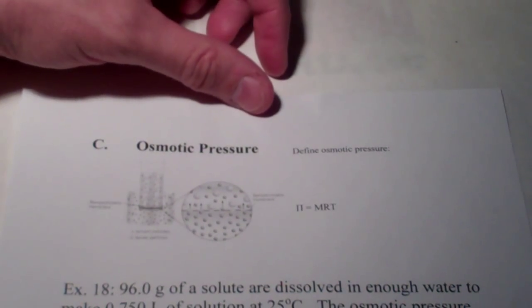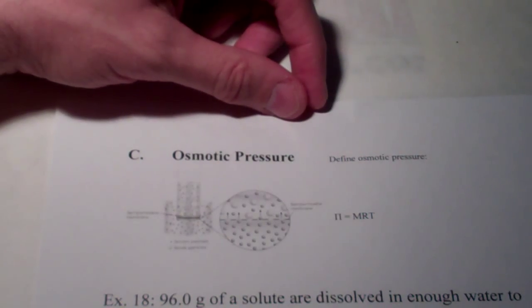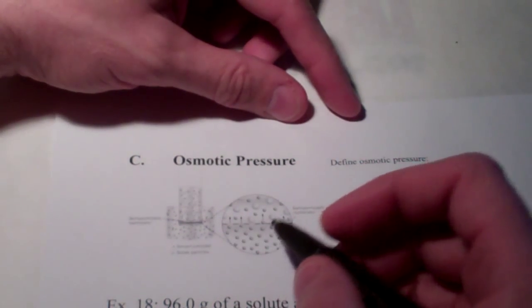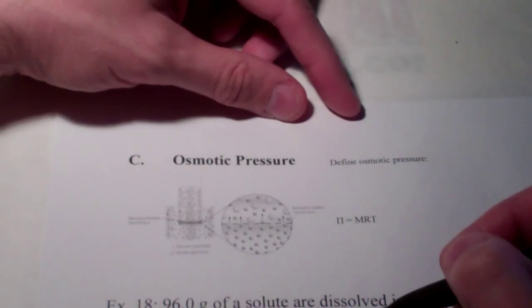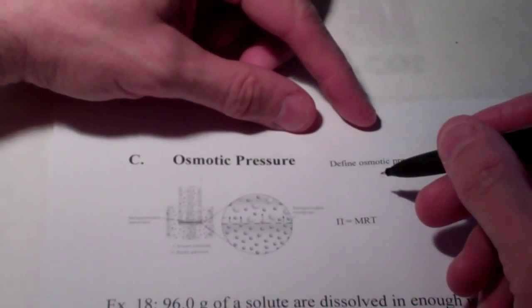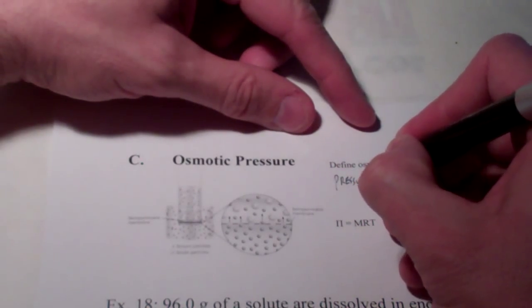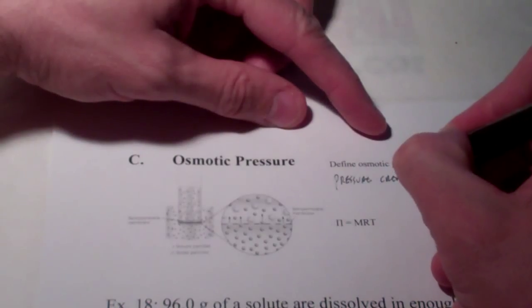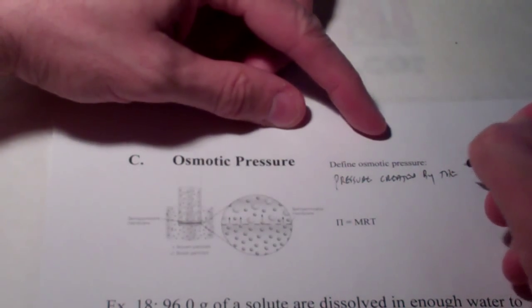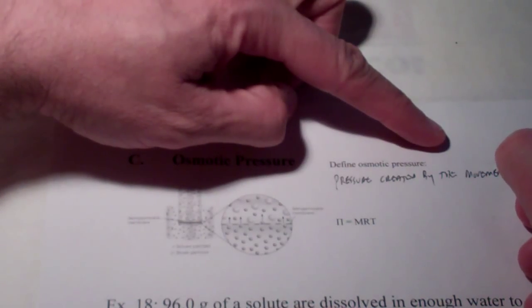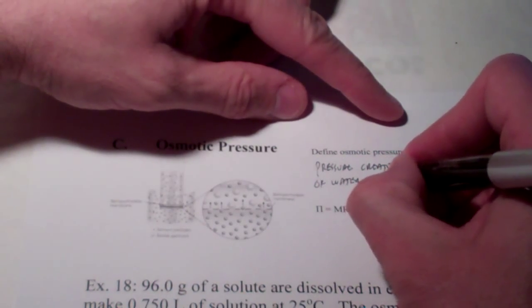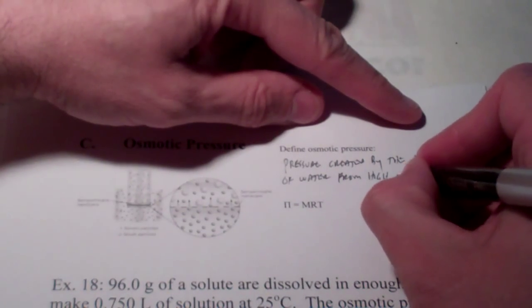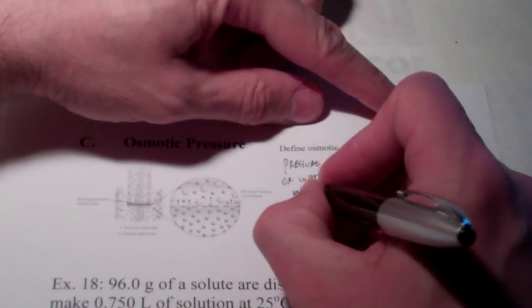All right. Last page here. I want to talk a little bit about osmotic pressure. We use this term in biology quite a bit. When we talk about osmotic pressure, we talk about the movement of water from an area of high water concentration to low water concentration. So, osmotic pressure is going to be the pressure created by the movement of water from high to low water concentration.